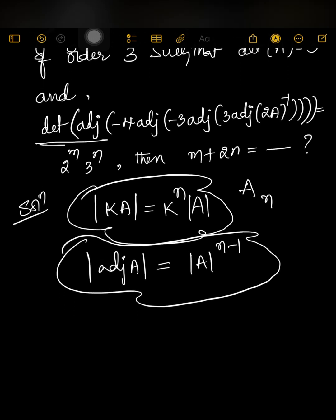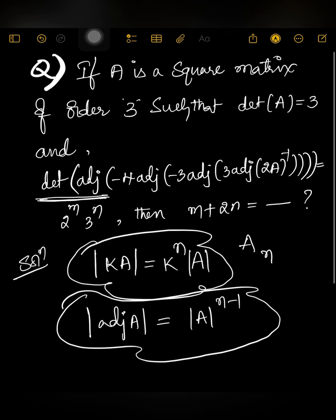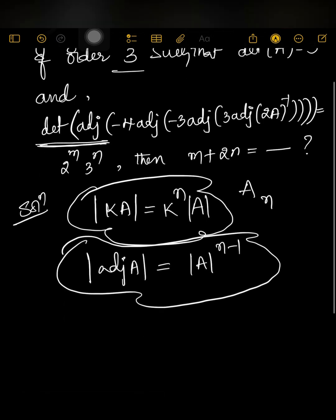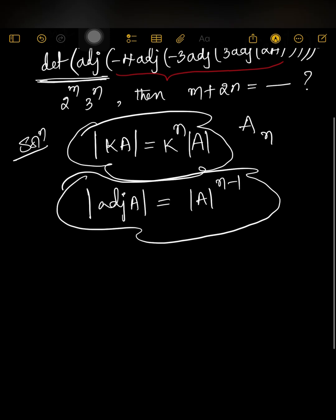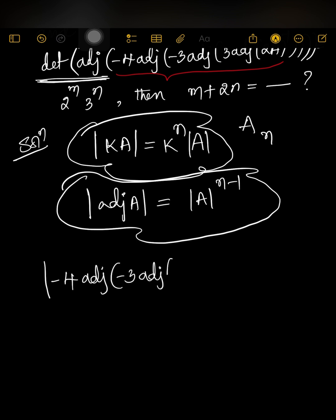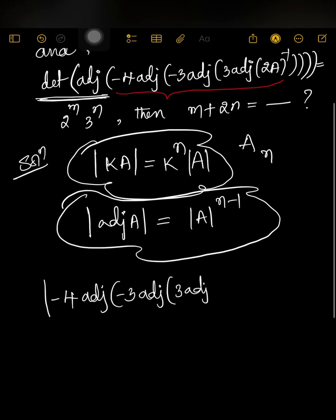So det(adj A) = (det A)^(n-1). Here the matrix is of order 3, so we apply this to the whole expression. The whole inner expression which is in place of A is: det of adjoint of (-4·adj(-3·adj(3·adj(2A)^(-1)))).